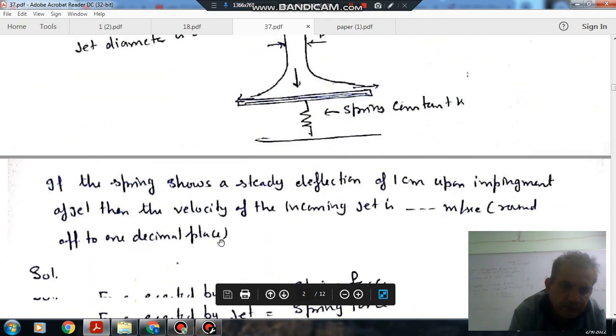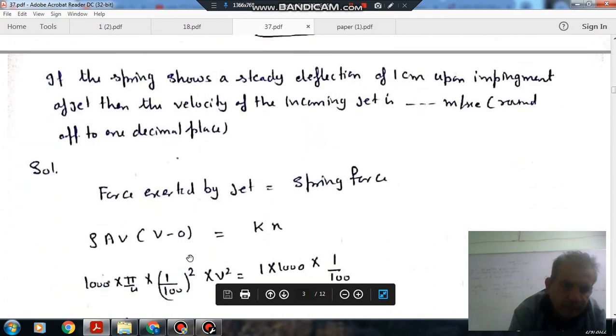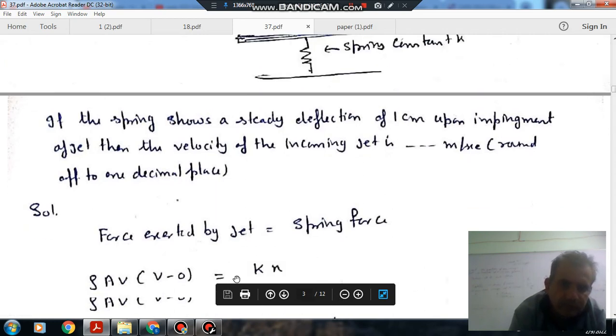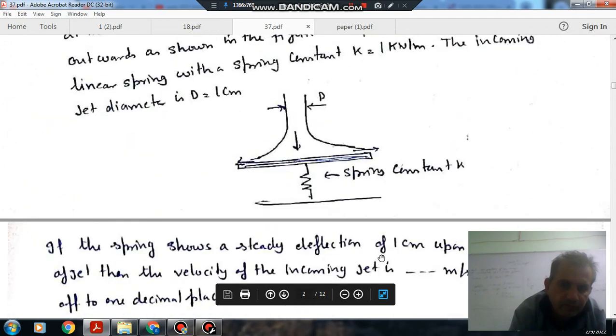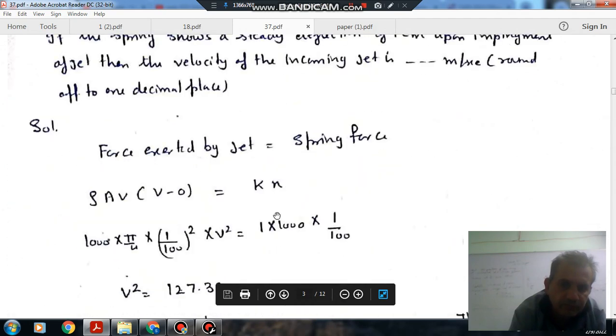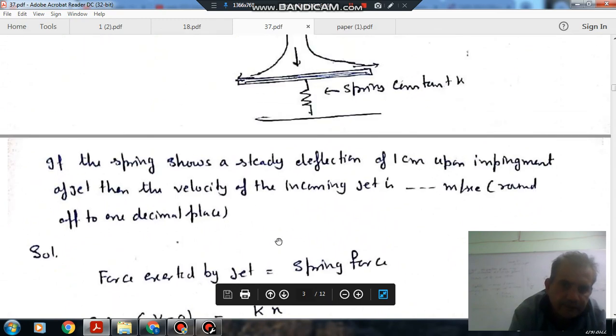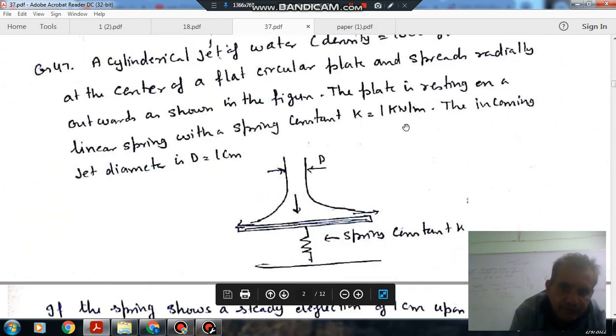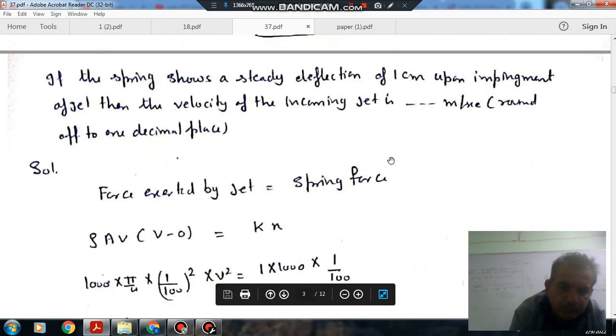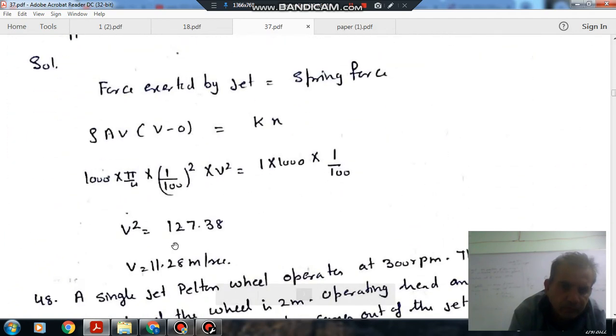So it will be ρAV². This is ρAV². The deflection of the spring is given as 1 cm. So the spring force is KX, and spring stiffness is given as 1 kN/m. So equating, V² = 1.27 × 10, which gives V = 11.28 meter per second.